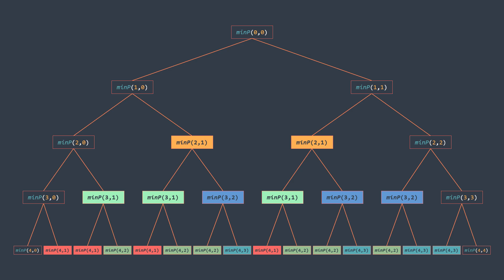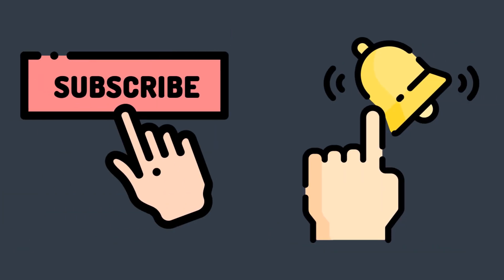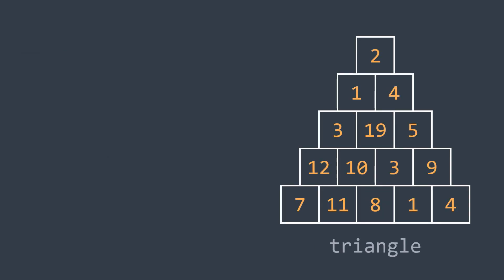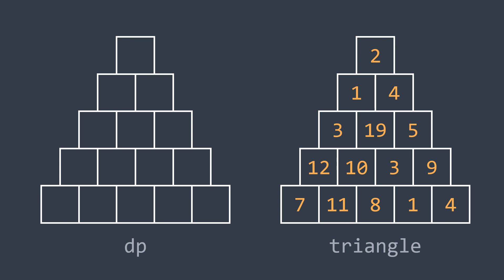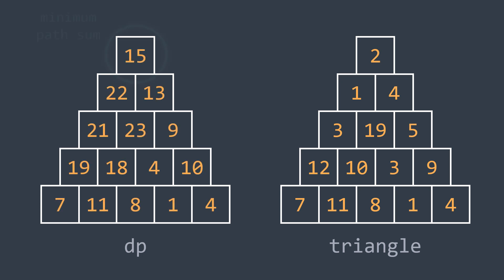One possible way is to use dynamic programming. With dynamic programming, we will use a 2D array dp of the same size as triangle, where dp[i][g] represents the minimum sum to go from triangle[i][g] to the last row. We fill values starting from the last row upward, and when we reach the first row — which has only one cell — it represents the minimum path sum we're searching for, and we return it.